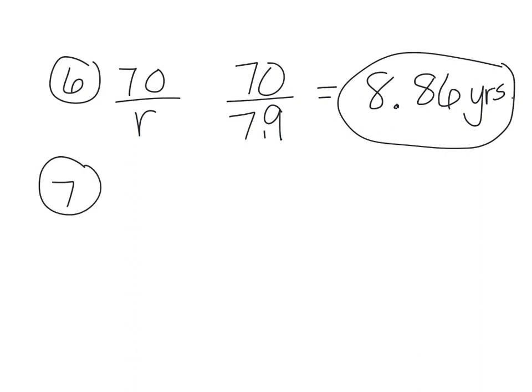Number seven: do you think the goal population will actually double in these 8.86 years? Probably not. We have limiting factors that come in. What is going to limit the population of the goals on Anacapa Island? Things like lack of space, competition for space, competition for food and water. If there are a lot of goals, predators will move in to eat them. Diseases can spread easily through a dense population, transmitting from one goal to another. Write down one to three of those limiting factors for the goals. And that's the end of population math number two.